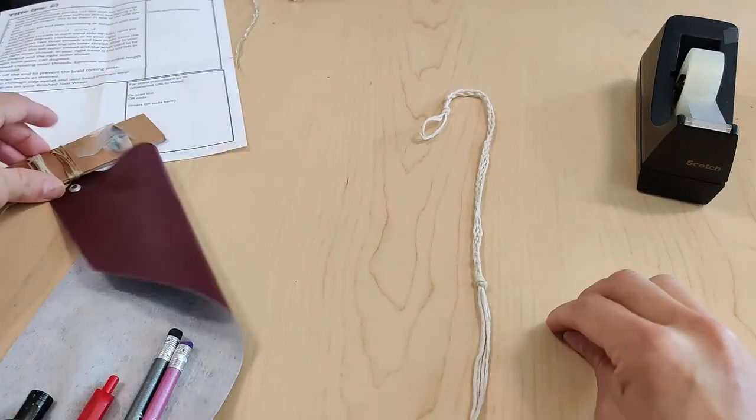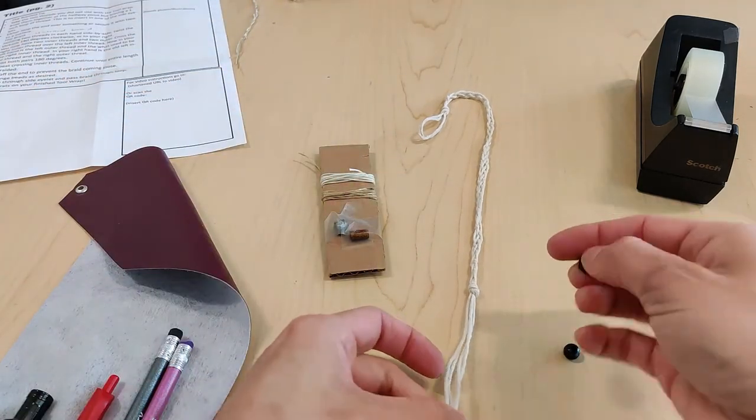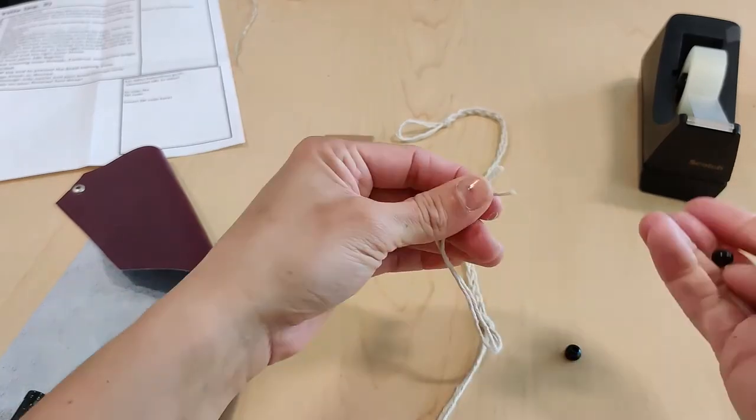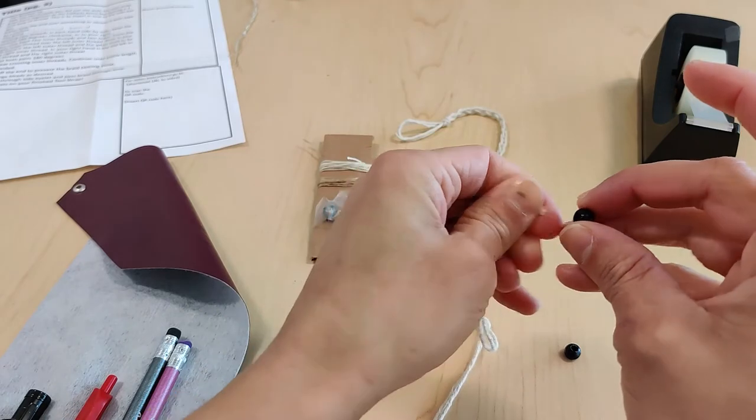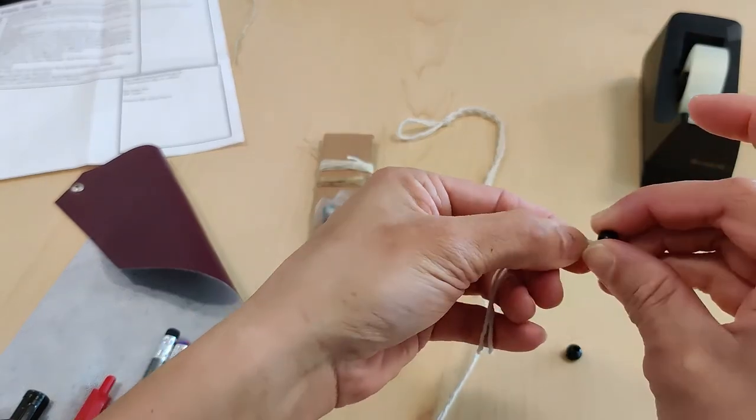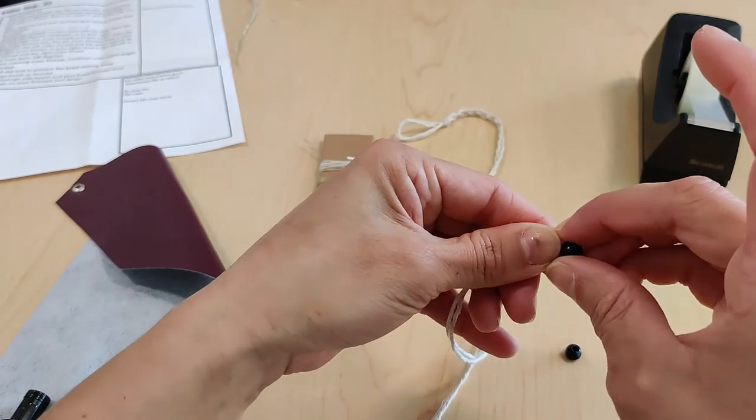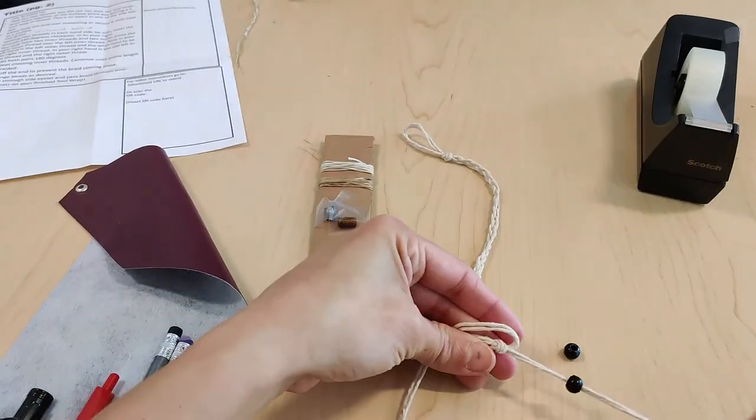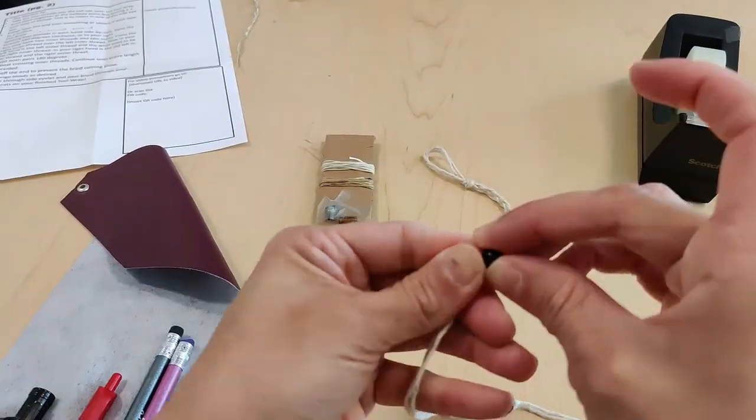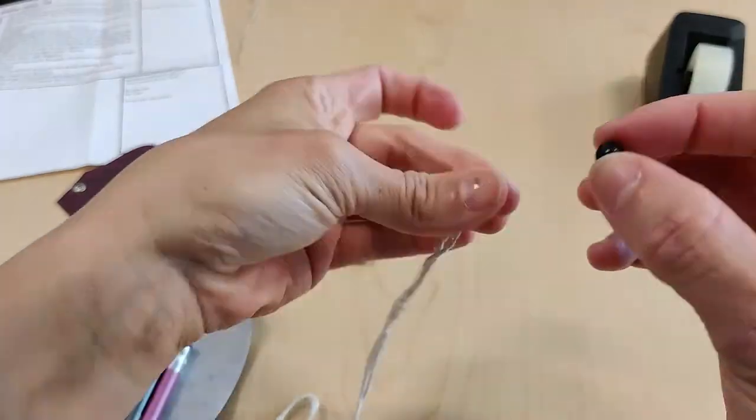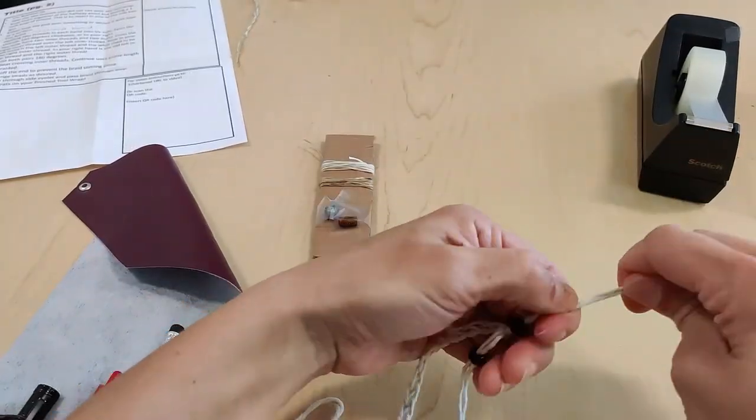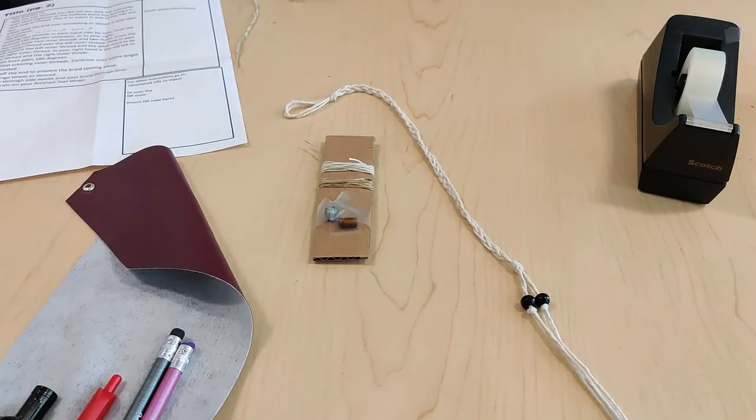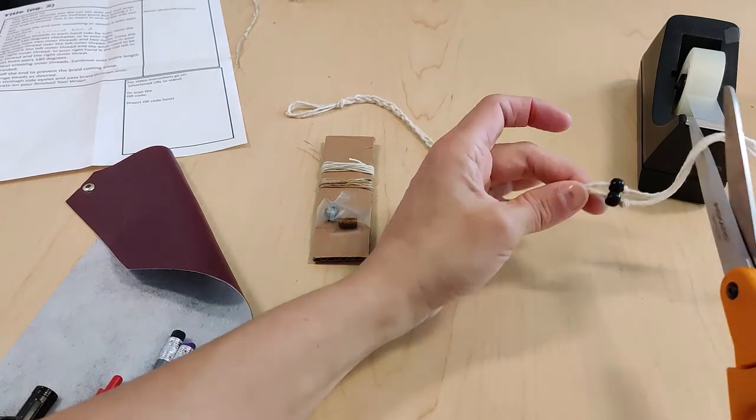Then you can take your beads. You should have four beads. You can use two, you can use four, which is personal preference, or you don't have to use any at all. You can thread your beads through and tie a knot for decorative addition. And if you want to, you can trim off some of the end.